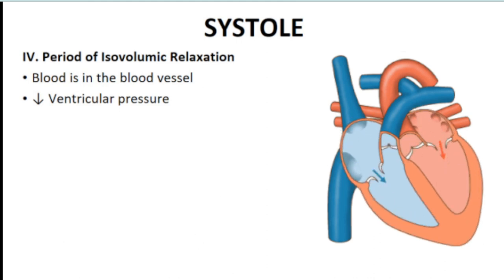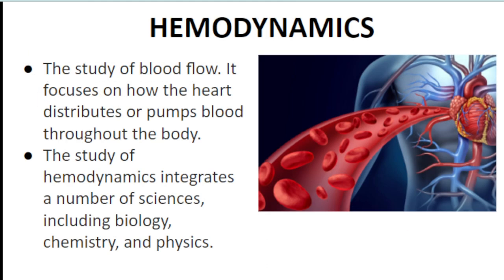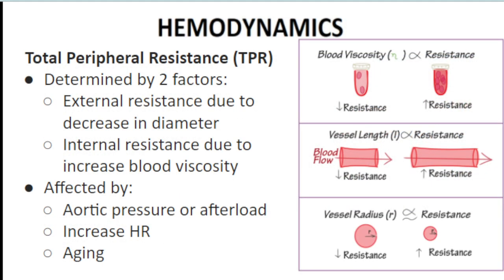Next, we discuss hemodynamics — the study of blood flow. This examines how blood is distributed, and the pressures and factors that allow blood to be propelled to different parts of the body. Hemodynamics integrates science, biology, chemistry, and physics. The first key concept is total peripheral resistance (TPR) — the impediment to blood flow — determined by two factors: vessel diameter and blood viscosity.